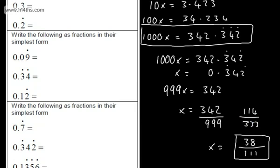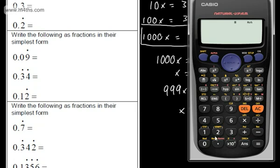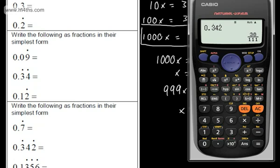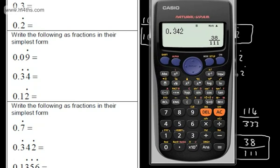So let's see what that gives us in the calculator. We put in 0 point, and then we enter the recurring part for 342, and that'll give us 38 over 111.